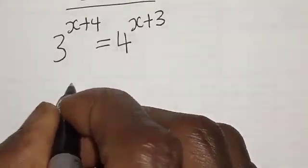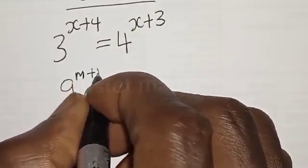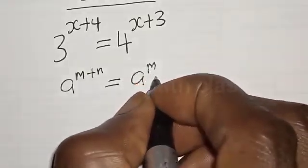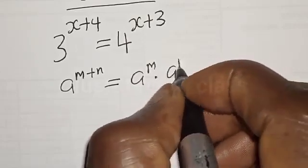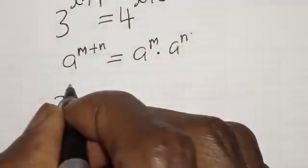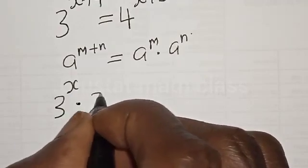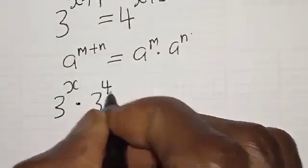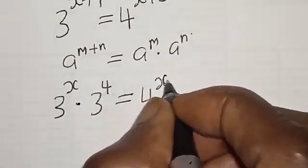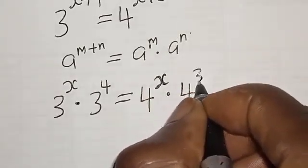Remember, if you have e raised to power m plus n, it is the same thing as e raised to power m multiplied by e raised to power n. Then we have 3 raised to power x multiplied by 3 raised to power 4, equal to 4 raised to power x multiplied by 4 raised to power 3.